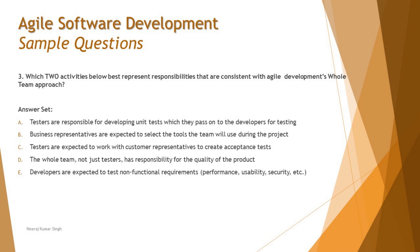Option B — 'Business representatives are expected to select the tools the team will use' — is also incorrect. In Agile's whole team approach, the entire team collaborates on tool selection; no single role dictates what tools are used. The team has complete ownership over decisions about what they use and how they use it.